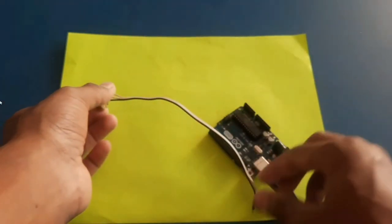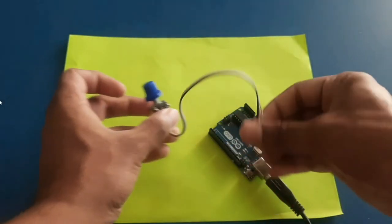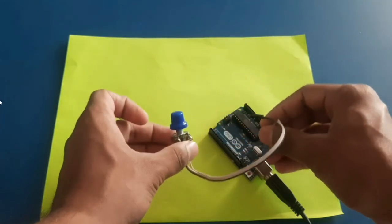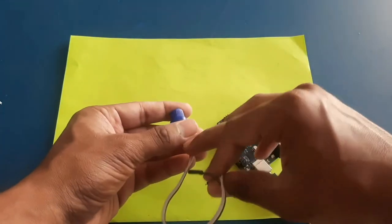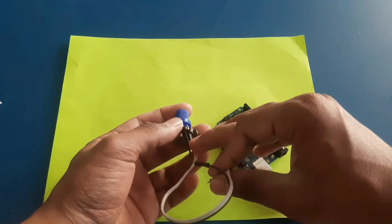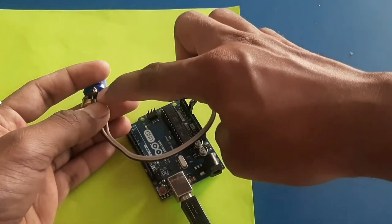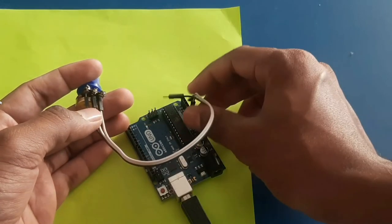Connect the middle one to analog pin of Arduino. So I am connecting this middle pin. This middle pin is white one so I have connected middle pin to A0.